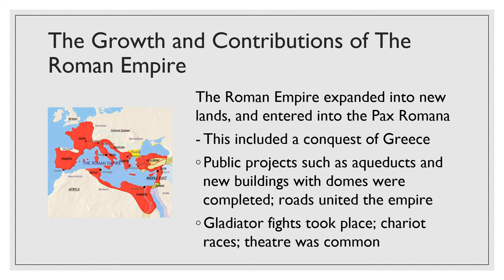The Roman Empire expanded its lands — eventually into Britain. Rome expanded during a period called the Pax Romana, which means 'peace of Rome.' The reason for that is Rome controlled so much land that the world was largely at peace for quite a while. Public projects took place, such as building aqueducts to transport water, which was important for Roman cities along with sewage systems. They built a lot of walls — like Hadrian's Wall in England to divide Scotland and England and keep the Scottish out. Domes were used in many building projects — that was an invention of Rome. And roads united the empire, which was really important.